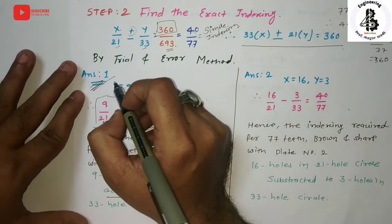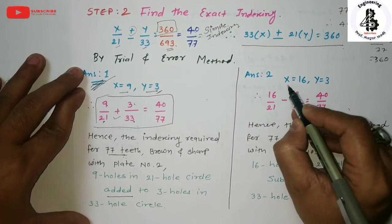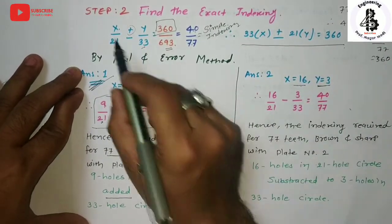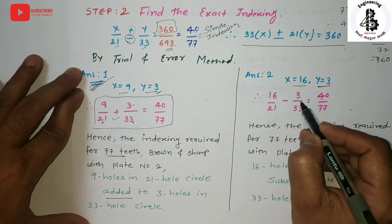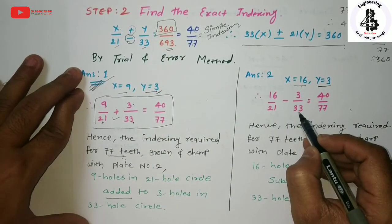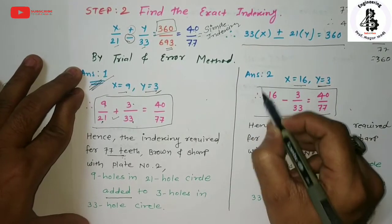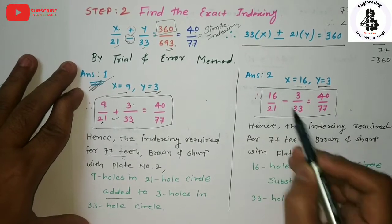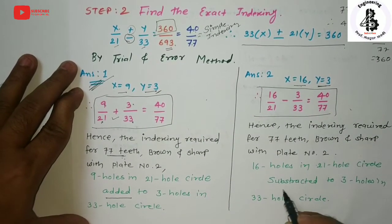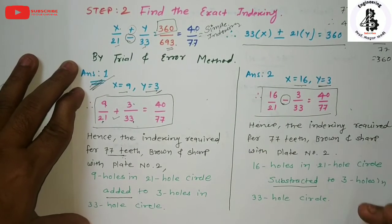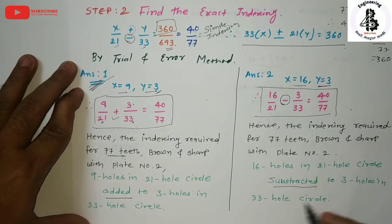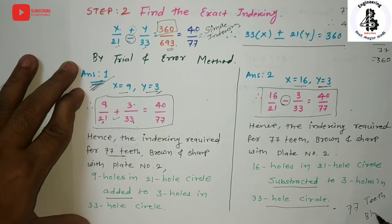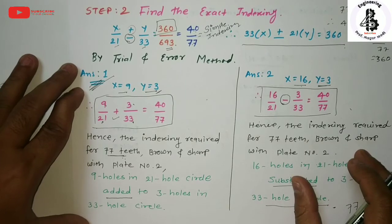Using more trial and error, you can also find x = 16 and y = 3. Substituting: 16/21 minus 3/33 = 40/77. Hence, the indexing required for 77 teeth using Brown and Sharp plate number 2 is: 16 holes in the 21-hole circle system, subtracted - because of the minus sign - from 3 holes in the 33-hole circle system, to get 77 teeth on the blank.